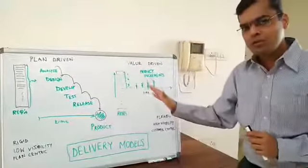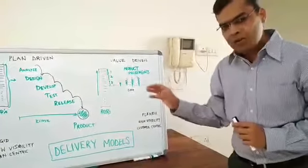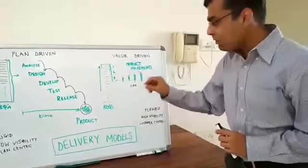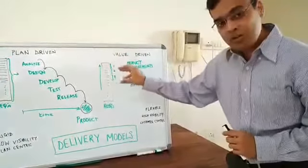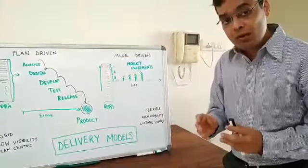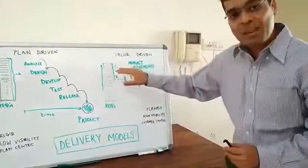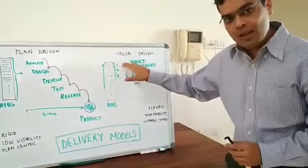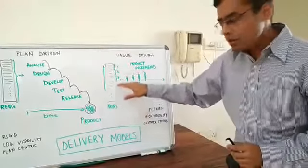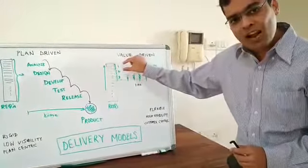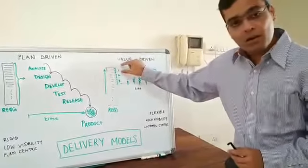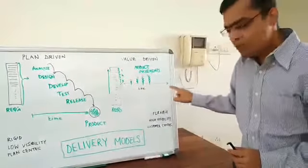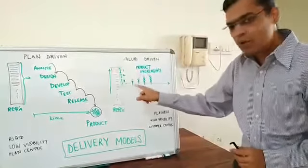Now let's switch over to value driven model. Value driven model, you have the requirements. You don't need to know all the requirements upfront though. What will happen is say you know a bunch of requirements which are very valuable for the customer. So you order these based on values. The highest value items will be always on top and lower value at the bottom. So based on that, once the highest value or high value items are refined enough, the software delivery team will take it and during the entire time, they break it down into iterations.